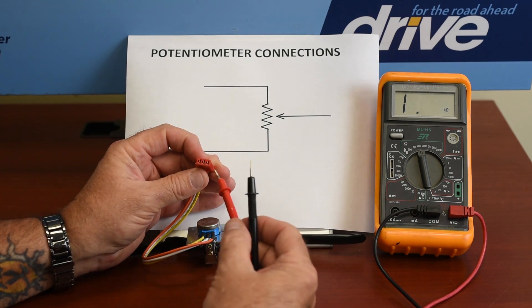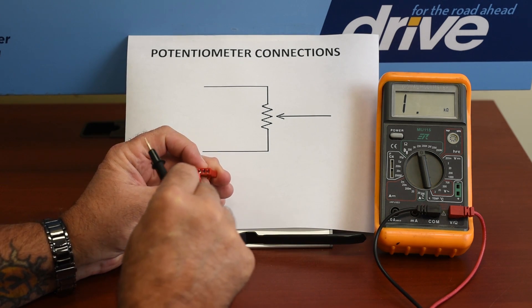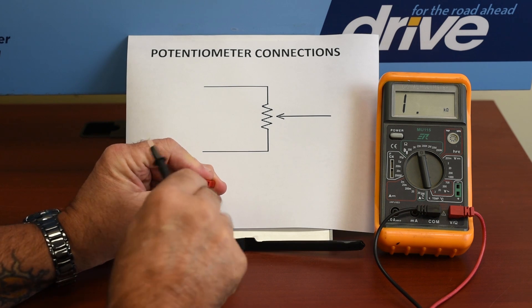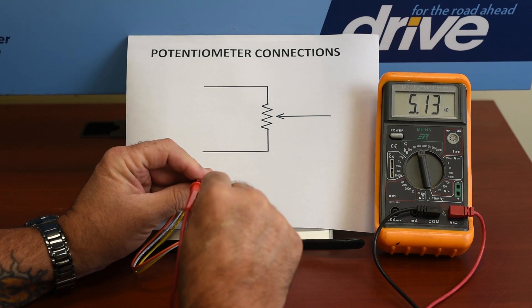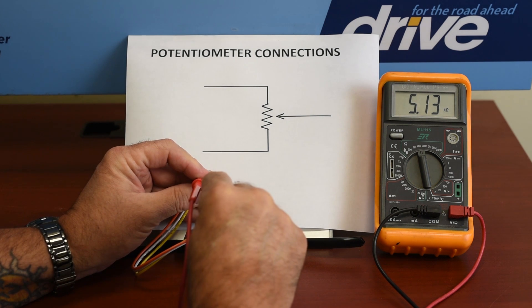So the first thing we're going to do is measure the outside resistance to the other outside resistance, and we have 5.13K. That's 5,130 ohms.